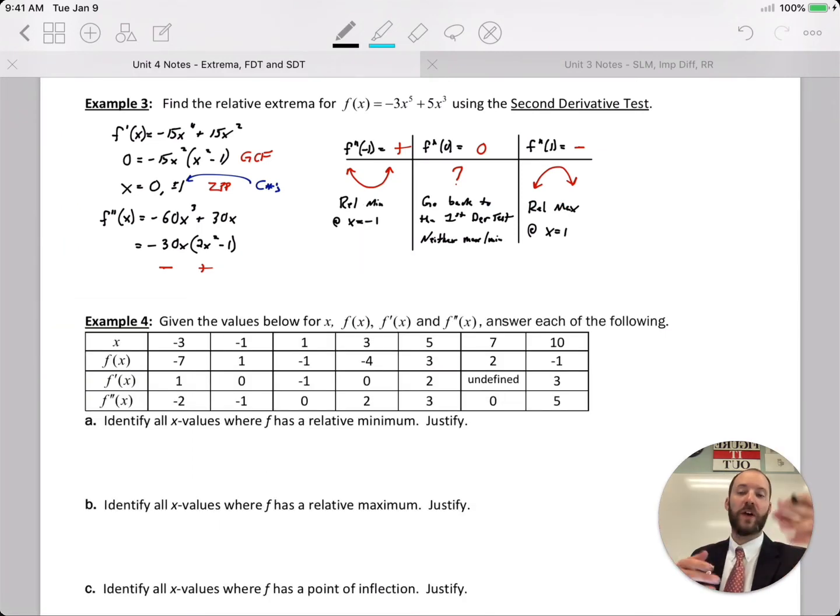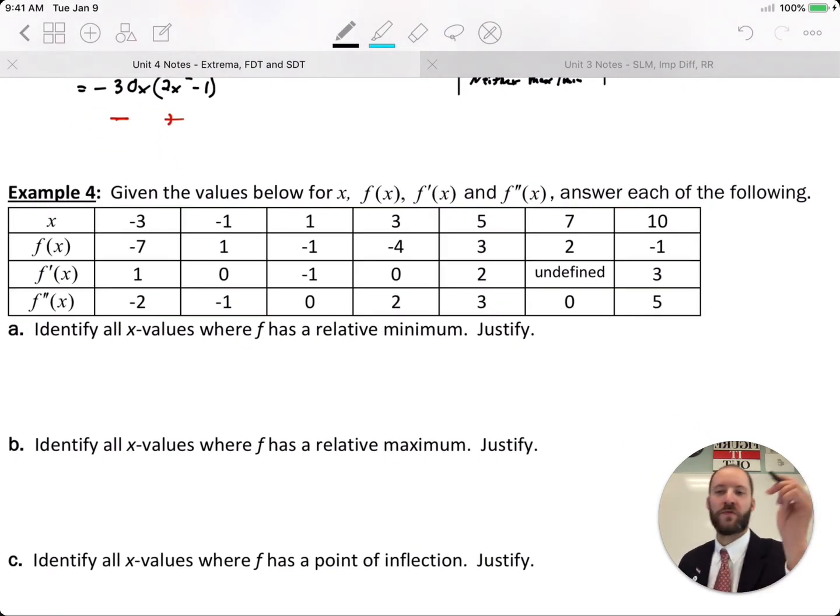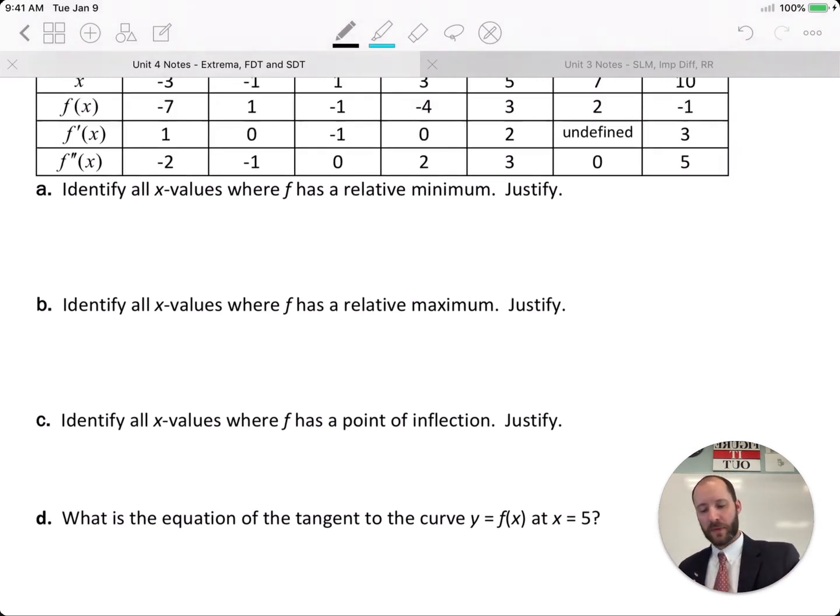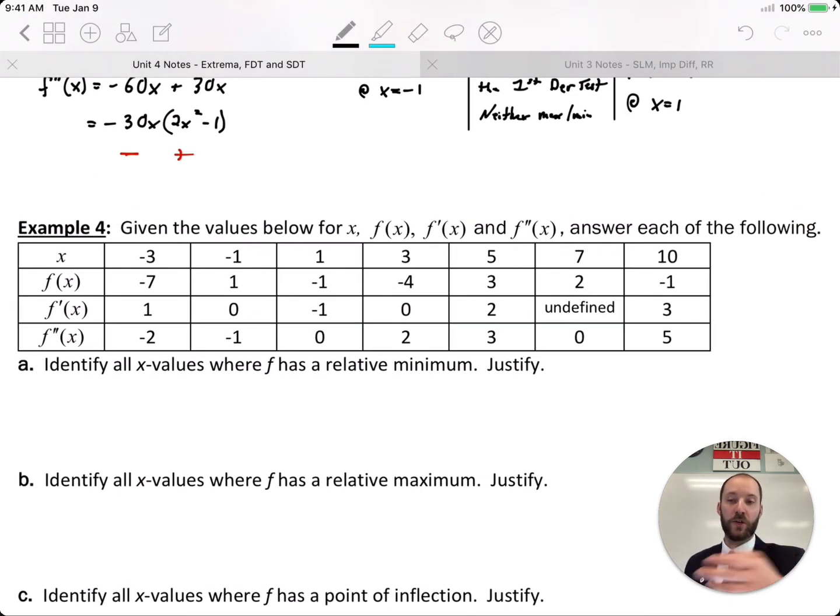Also an example of how the second derivative test works. By this point going through all these sections, you are a walking talking graph calculator. So given information, you can decide what a graph looks like pretty accurately. Down here in this table we have x, f(x), f'(x), and f''(x) with all these values. Use those values to look at the tables a, b, c, and d.